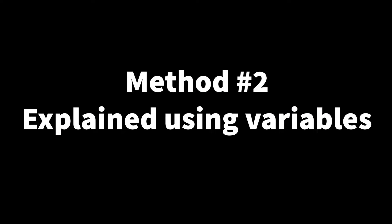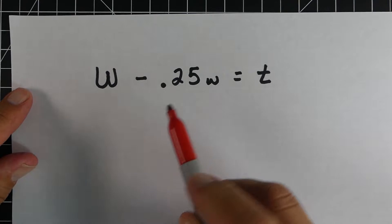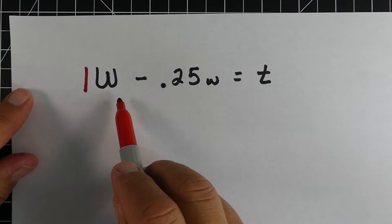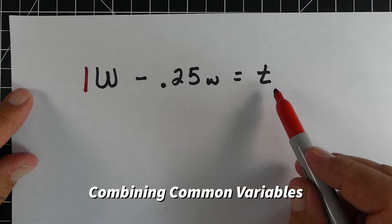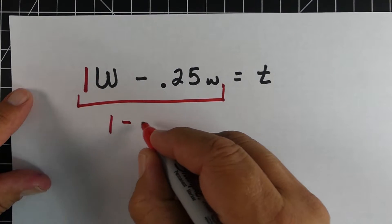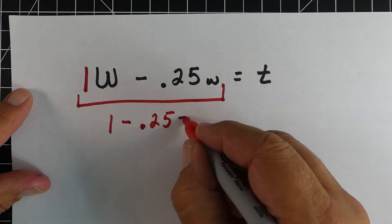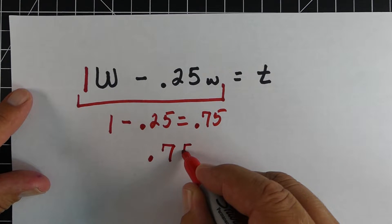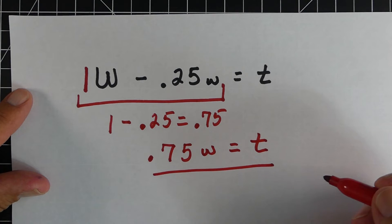Another way to think about it is using variables. The whole amount w represents one whole, or 1w. The 25% we're saving is 25% of the whole, or 0.25w. We can combine and simplify: 1 minus 0.25 equals 0.75, so 0.75w equals the sale total. This shows algebraically why Method 2 works.